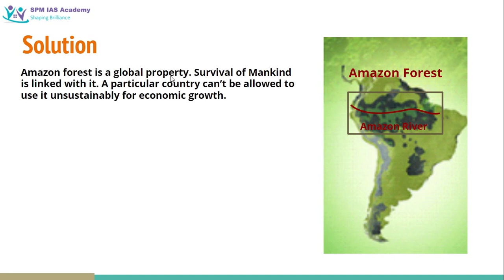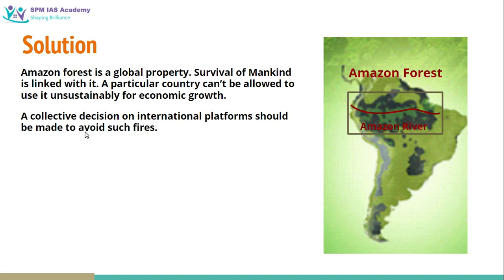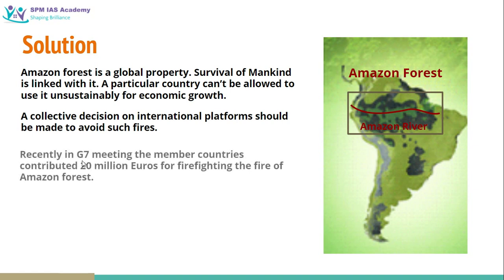Let us see the solutions. The Amazon forest is a global property and the survival of mankind is linked with it. A particular country cannot be allowed to use it unsustainably for economic growth. If Brazil causes irreversible damage to the Amazon forest, it will have a negative impact on the entire world — so one country cannot treat it like its private property. The Amazon has to be treated as a global property, and collective decisions need to be taken on international platforms such as the United Nations. Recently at the G7 meeting, member countries contributed 20 million euros for fighting the fires of the Amazon forest.